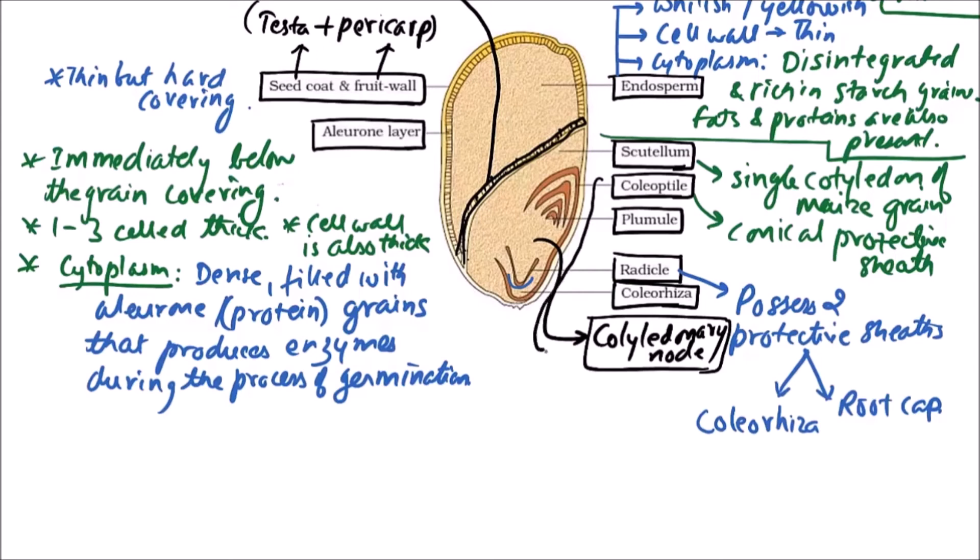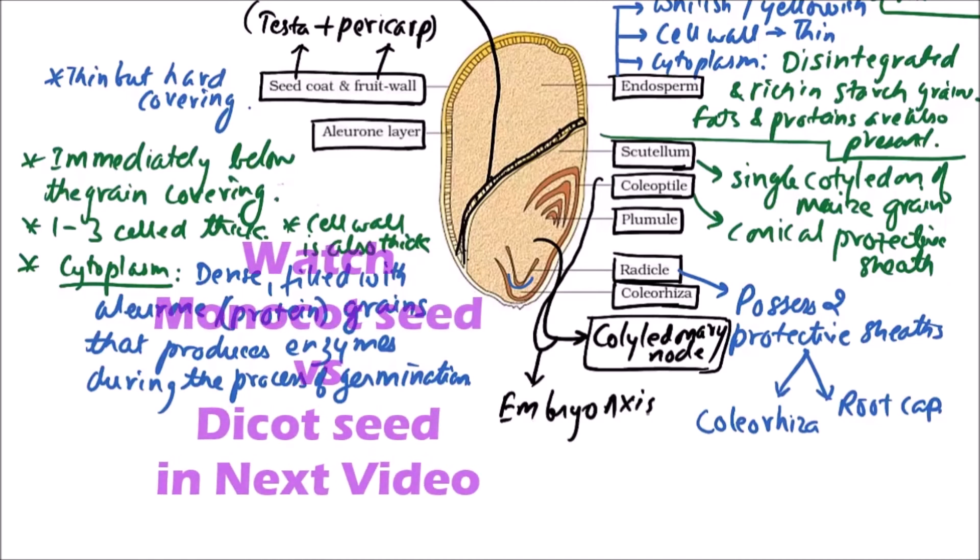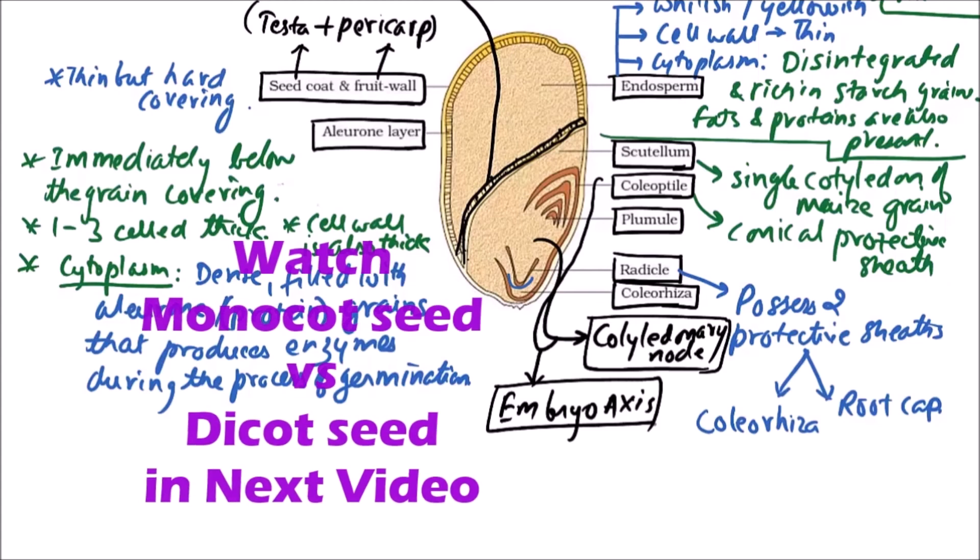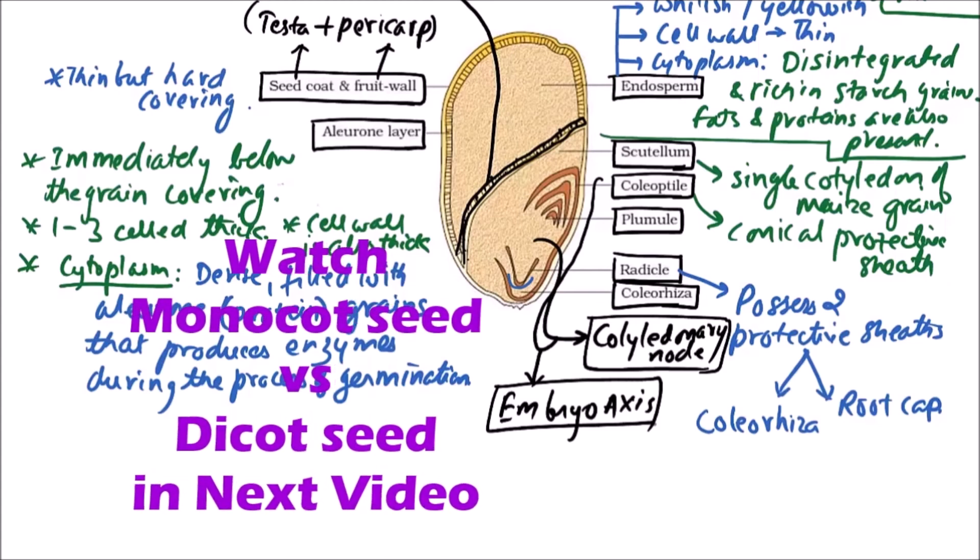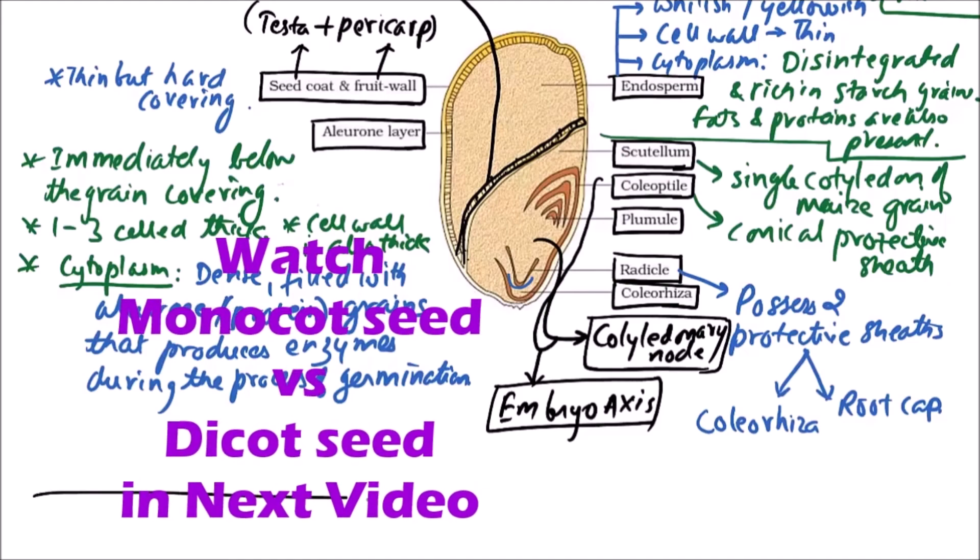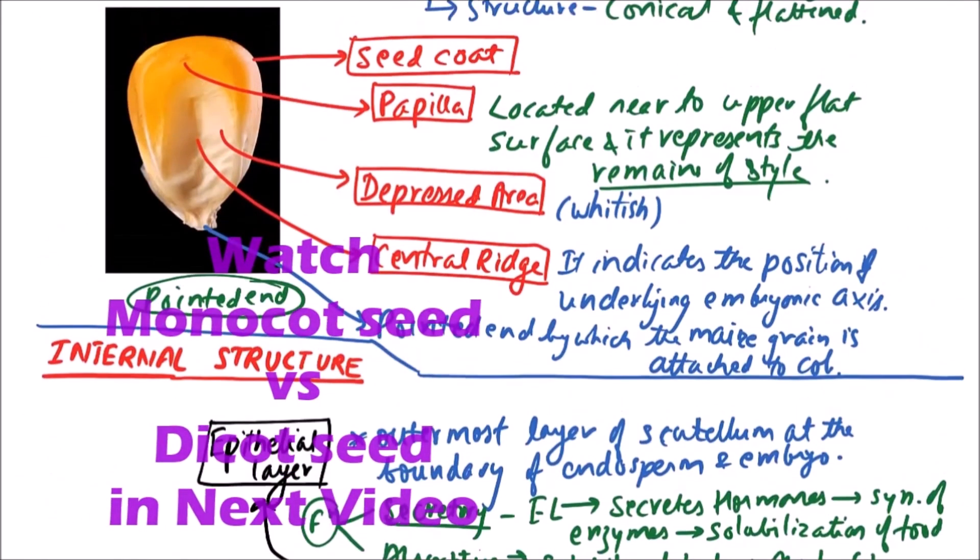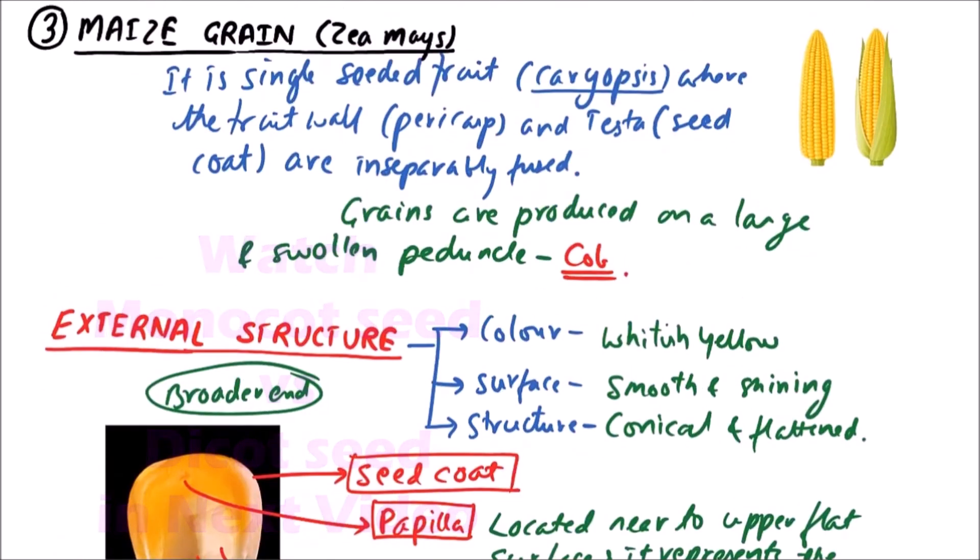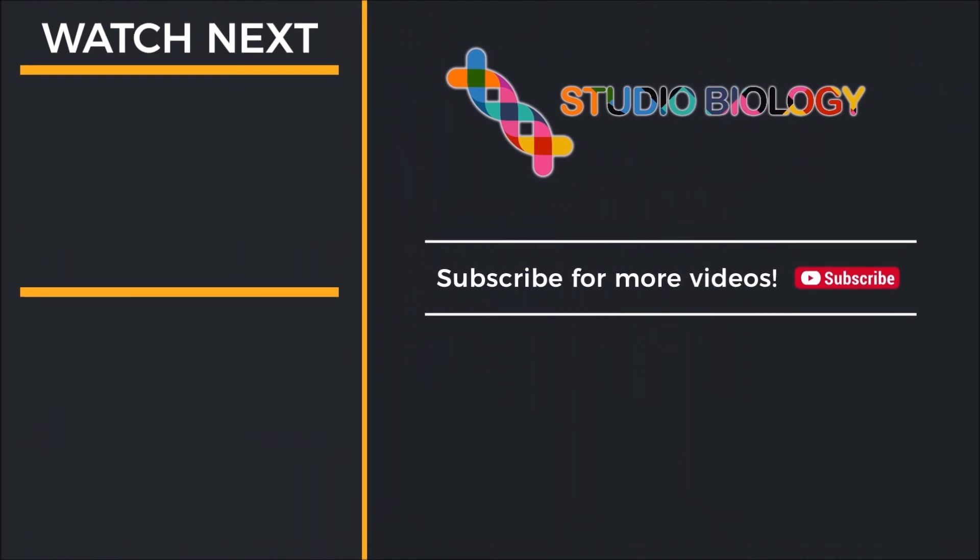So this is the structure, internal structure of maize grain. This is the structure of maize grain.